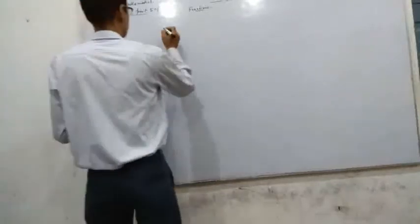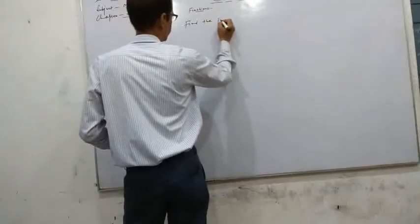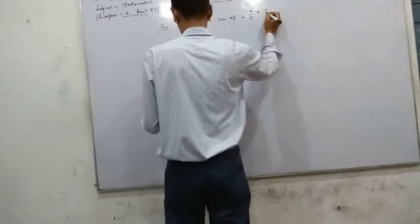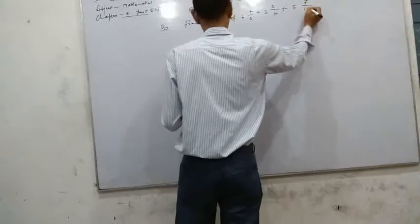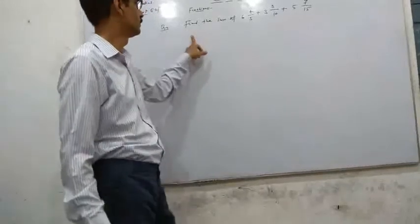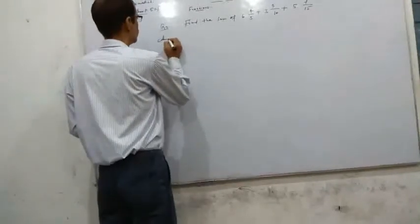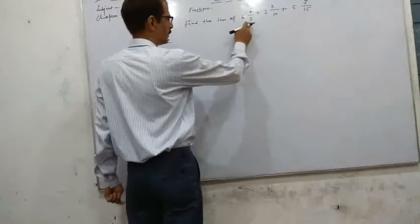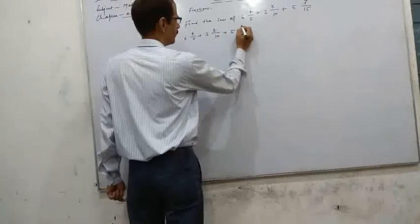Now find the sum of 6 4 by 5 plus 3 9 by 10 plus 5 7 by 15. Here the question is given which is in the form of mixed fraction, so first of all you convert it into simple fraction.